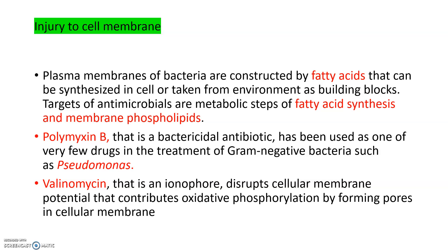Polymyxin B has bactericidal action and is one of the few drugs used to treat gram-negative bacteria such as Pseudomonas. Valinomycin is an ionophore that disrupts the cell membrane potential; it forms pores in the cell membrane, disrupting oxidative phosphorylation and ultimately ATP synthesis.